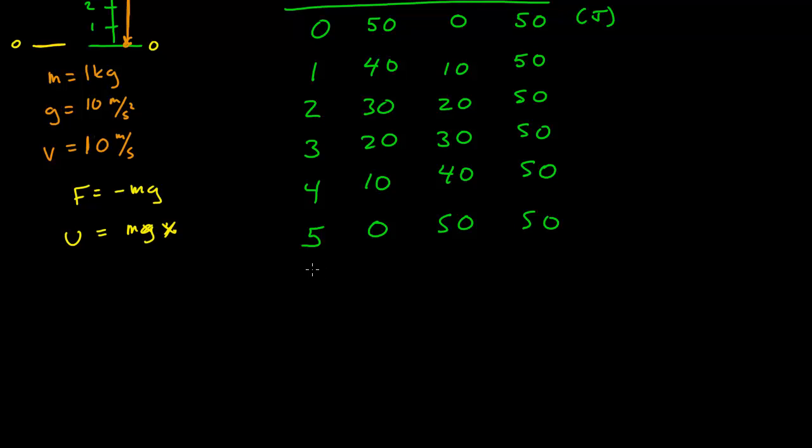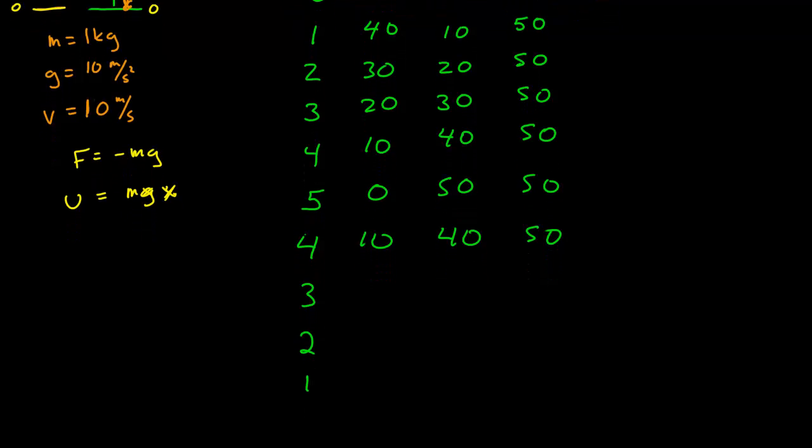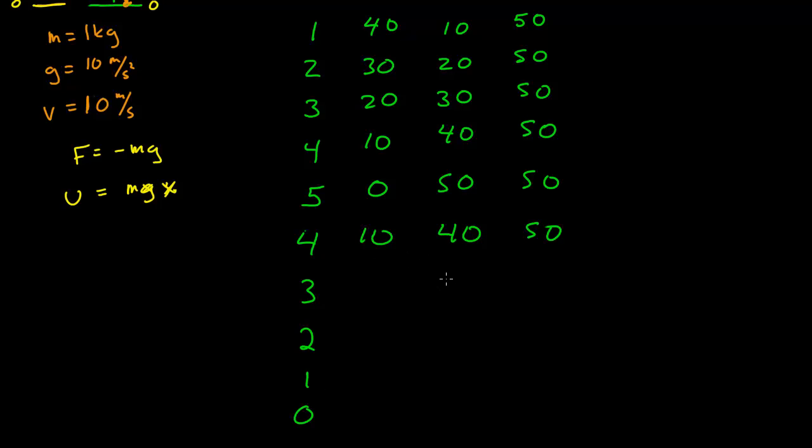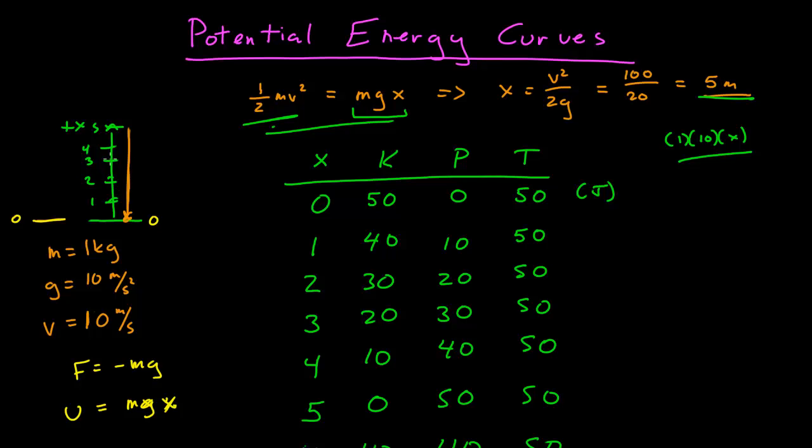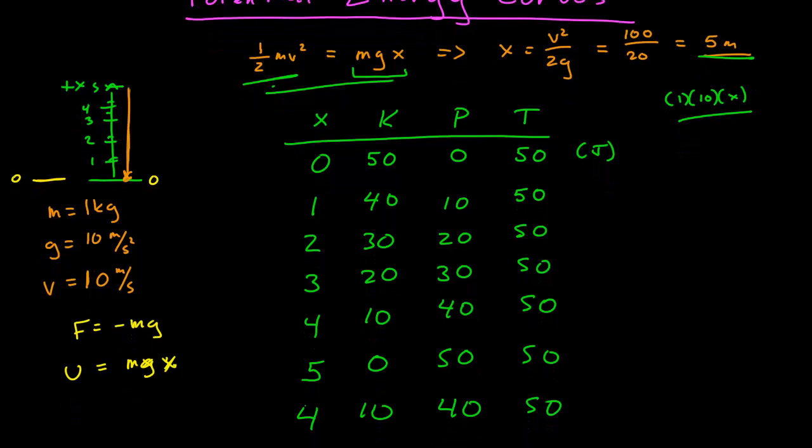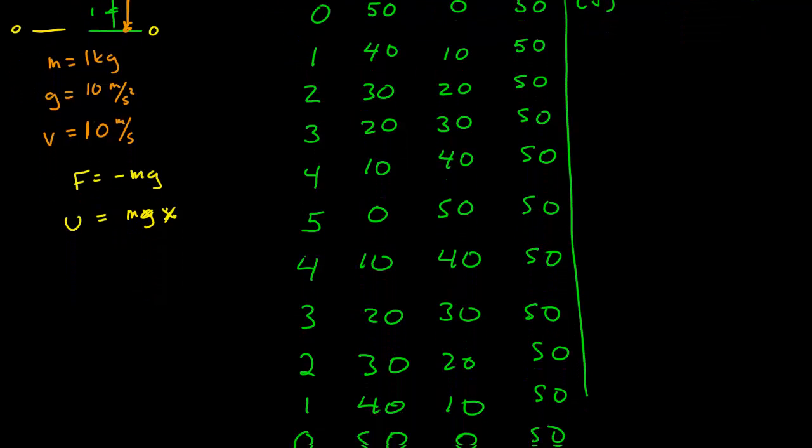As it comes back down, it reverses, so it comes back down to a position at 4, and we get this back again, 50. 3, 2, 1, and 0. 3 is now 30 and 20, 50. 2 is 20 and 30. 1 is 40 and 10, and now all kinetic back again. We can see how as the object travels in space, the total energy is conserved, and it exchanges the distribution of energy between potential and kinetic as it goes up to its height and comes back down.